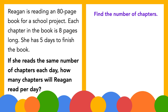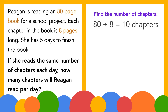To start, we'll find the number of chapters in Regan's book. We know the book has eighty pages, and each chapter is eight pages long. We can divide to find out how many chapters are in the book. Eighty divided by eight equals ten. There are ten chapters.